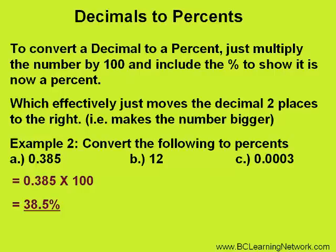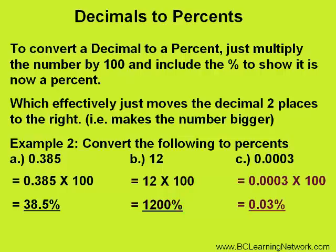If we take the number 12 and convert it to a percent, we do the same thing — multiply it by 100, and that will give us 1200%. Finally, we have 0.0003, or 3 ten-thousandths. If we multiply this by 100, we move the decimal two places to the right, which gives us an answer of 0.03%.